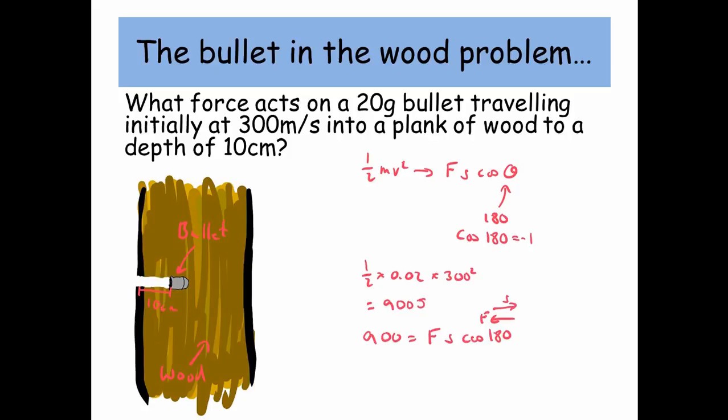And finally, we know 900 is equal to the force times the displacement times cos 180. So 900 equals the force times 0.1, because that's the depth that the bullet goes into, times by minus 1, because of the angles between the force vector and the displacement vector.